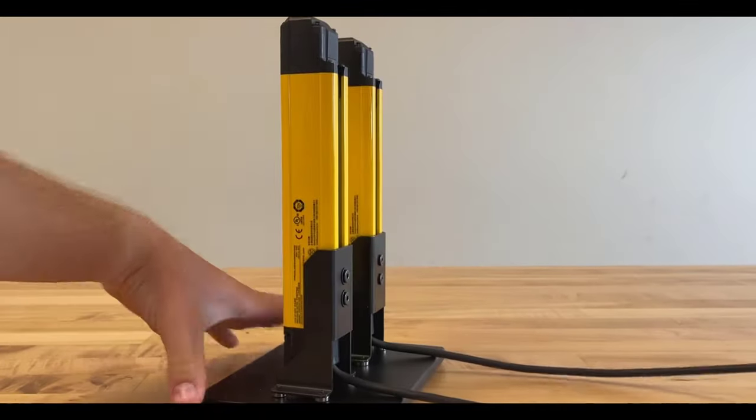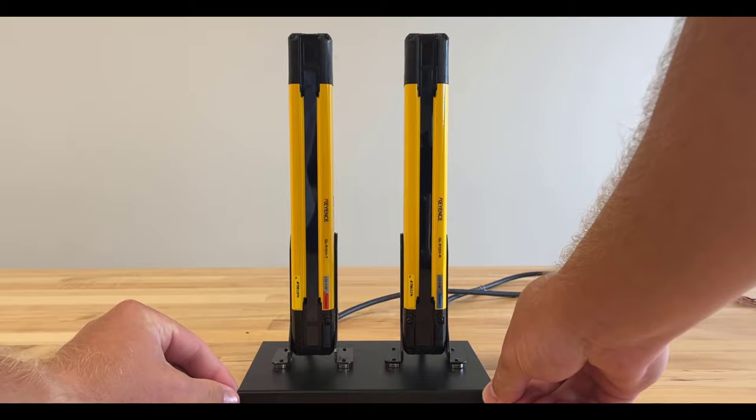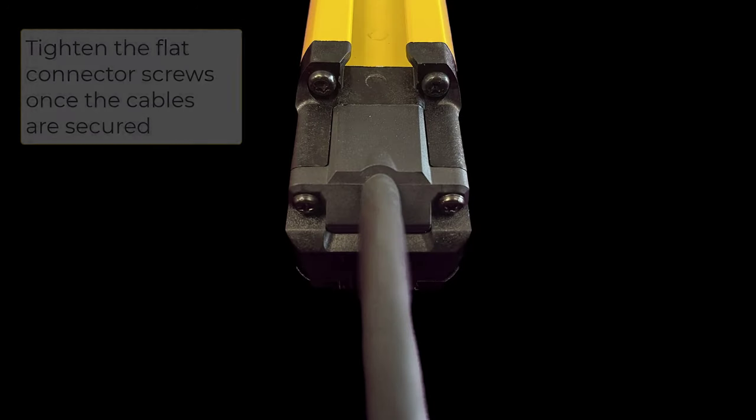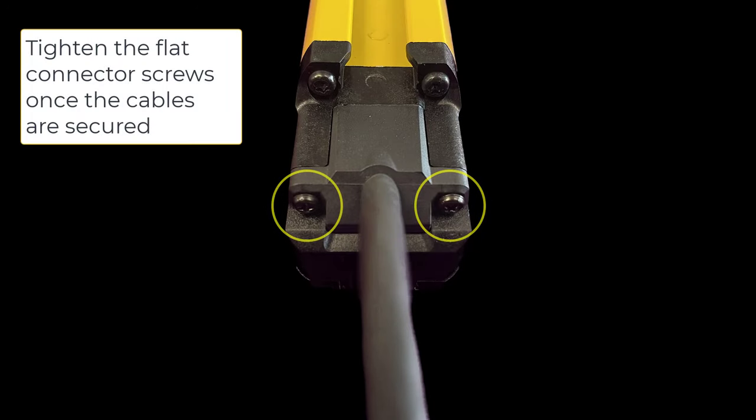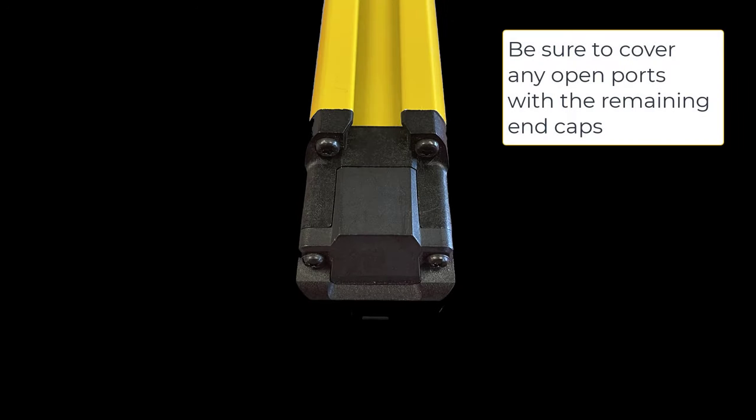As we rotate these curtains around, you'll see that both cables are connected to the bottom of the light curtains. Once the connectors are secured to the light curtains, locate the screws on the back of the connector and tighten both of those down so that everything is properly secured to the base of the light curtain. Be sure to cover any open connector ports with the end caps to avoid errors. Use the two screws on the side to secure these down.